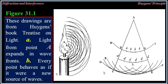Figure 31.1: These drawings are from Huygens' book, Treatise on Light. A: Light from point A expands in wave fronts. B: Every point behaves as if it were a new source of waves.